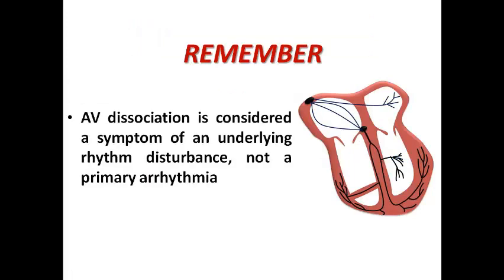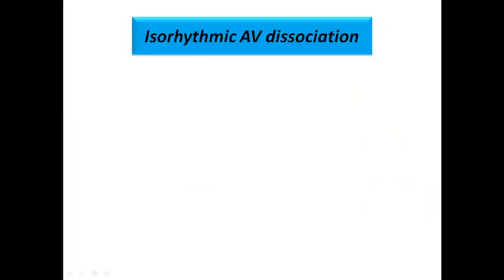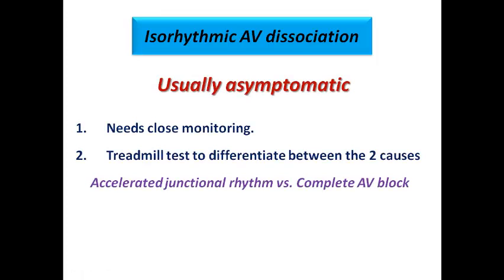Remember that AV dissociation here is a symptom or result of an underlying rhythm disturbance — either an accelerated junctional rhythm competing with a slowing sinus rhythm, or complete AV block with an accelerated junctional escape. It is not a primary arrhythmia. Isorhythmic AV dissociation is usually asymptomatic, but when diagnosed on ECG it needs close monitoring, and sometimes a treadmill test to differentiate between the two causes.